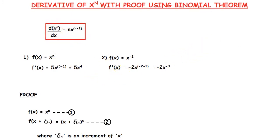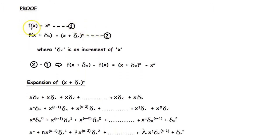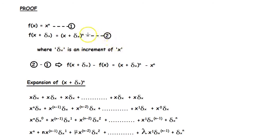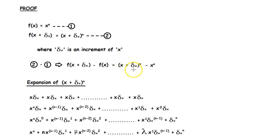Now for the proof of this theorem. We take f of x is equal to x to the power n as our first equation. Like we learned in our previous video, we can take f of x plus delta x is equal to x plus delta x whole thing to the power n as our second equation, where delta x is an increment of x. We subtract equation 1 from equation 2, giving us f of x plus delta x minus f of x is equal to x plus delta x to the power n minus x to the power n. Now we need to expand this using the binomial theorem.